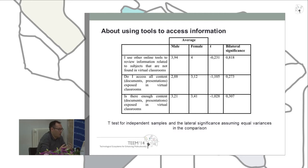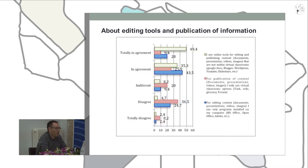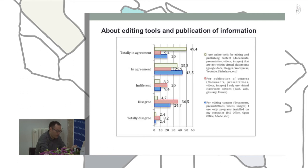For the dimension about editing and publication tools: over 50% of respondents use only programs installed on their computers for editing content. It also shows that approximately one in three respondents — about 30% — disagree or strongly disagree with this statement, which suggests that this group of students is using online tools for editing documents, presentations, videos, and images.